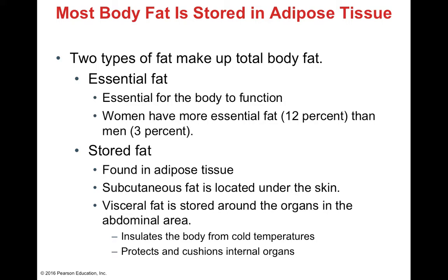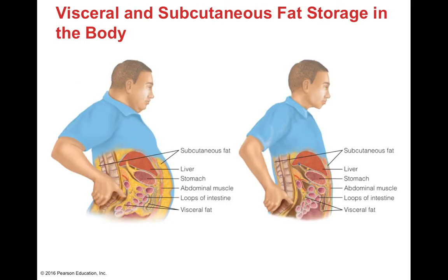There are two different types of fat making up total body fat. Essential fat is fat needed for the body to function — women have a higher percentage at 12%, while men have 3% essential body fat. We also have stored fat: essential fat is needed for body function, while stored fat is set aside for later use. This includes adipose tissue and subcutaneous fat located underneath the skin, as well as visceral fat stored around the organs and in the abdominal area.